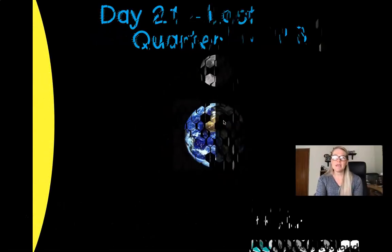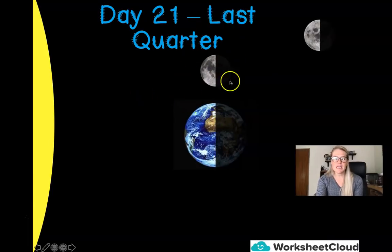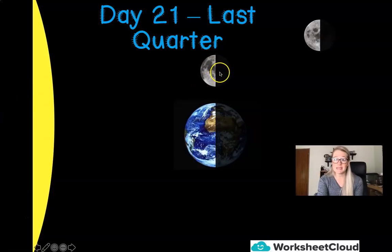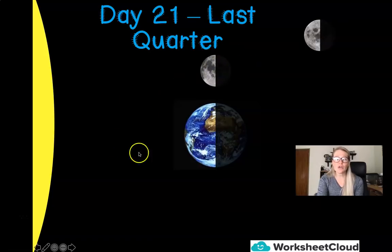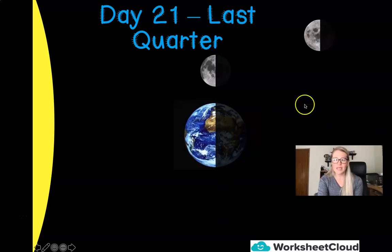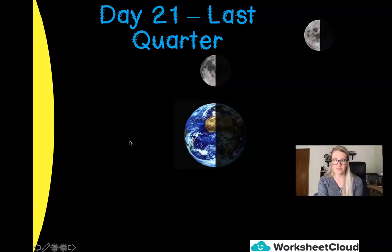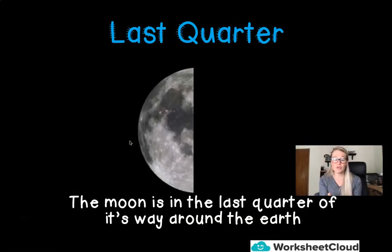After our waning gibbous, we have the last quarter. We see half of the moon, but we call it the last quarter because it is the last leg of the journey — it only has a quarter of its journey left to travel. It started as a new moon, traveled a quarter of the way to the first quarter, then halfway to the full moon, and now at the third position we call it the last quarter.